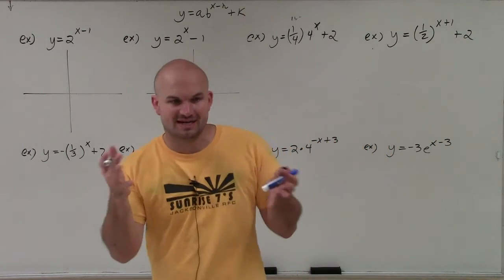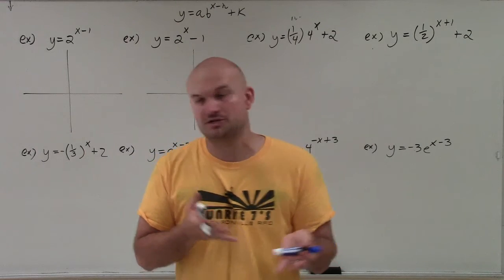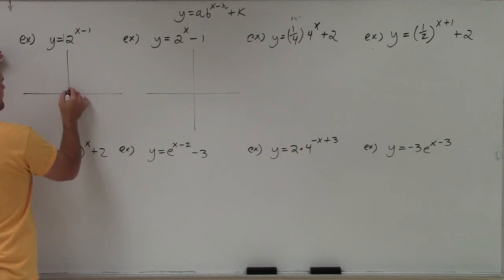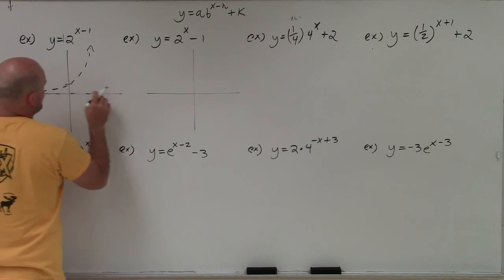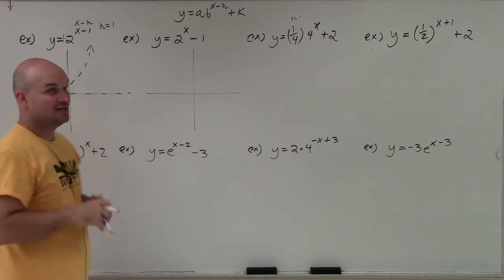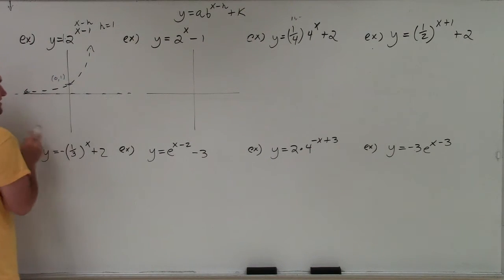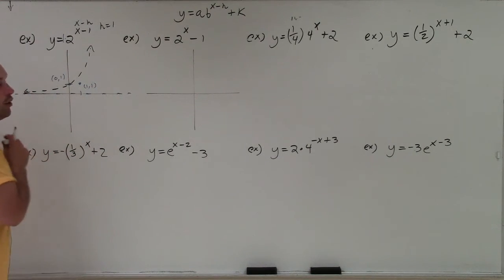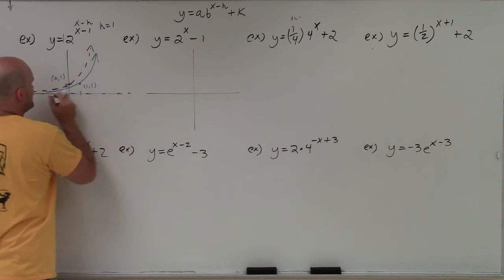Let's get into graphing. For the first example, I like to sketch the parent graph first — just a times b to the x — then apply the transformations. Forget the minus 1 for now; we just have 2 to the x with a equal to 1, so the graph crosses at 1. Now x minus 1 means h equals 1, shifting the whole graph one unit to the right. My point moves from 0 comma 1 to 1 comma 1. Since we only shifted horizontally, the asymptote doesn't move.